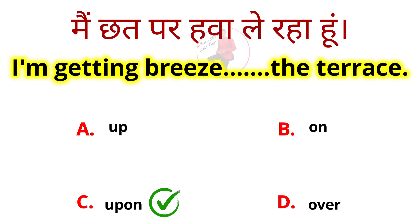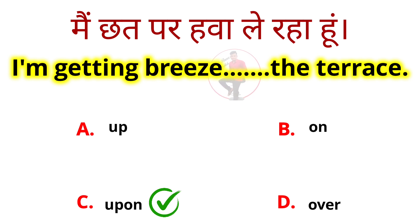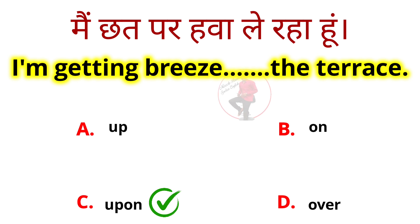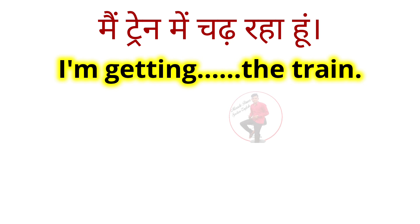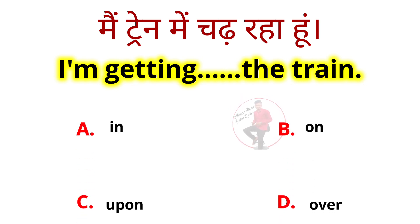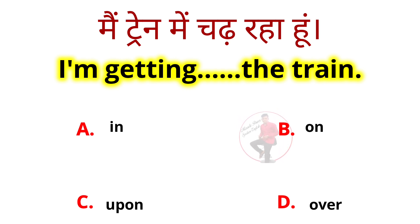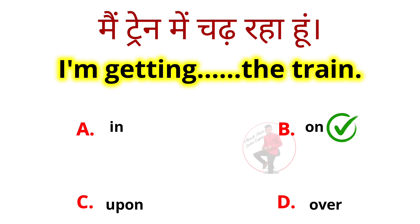Aap chhat par hawa le rahe ho — options: in, on, upon, over. The correct answer is 'on.' I am getting on the train. You may have used 'in' here, but 'in' is not used because when you board a train you get 'on' it.